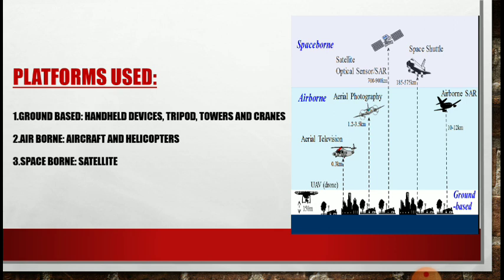Examples also include towers and cranes. Examples of airborne platforms are aircraft and helicopters. Examples of spaceborne platforms is satellite. Satellite is nowadays widely used as a platform because it is the most stable platform among all the platforms. In the image you can see all the different types of platforms.